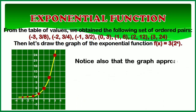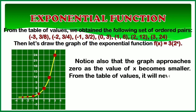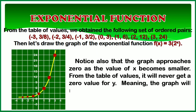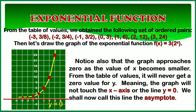Notice also that the graph approaches 0 as the value of x becomes smaller. From the table of values, it will never get a 0 value for y, meaning the graph will not touch the x-axis or the line y equals 0. We shall now call this line the asymptote.